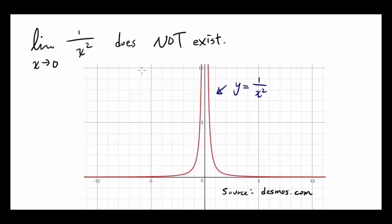In this video, I want to show you that the limit as x approaches 0 of 1 over x squared does not exist. This is a graph of y equals 1 over x squared from Desmos.com.